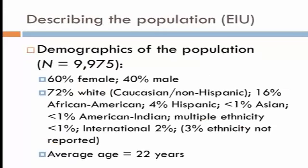So how do you do that? These demographics were taken last year for EIU. At the time there were 9,975 students in total: 60 percent were female, 40 percent male, 72 percent were Caucasian non-Hispanic, 16 percent were African-American, 4 percent Hispanic, less than one percent were Asian, less than one percent were American Indian, less than one percent were multiple ethnicity, two percent were international, and three percent didn't report anything. Your sample would want to be as representative of this demographic as possible.